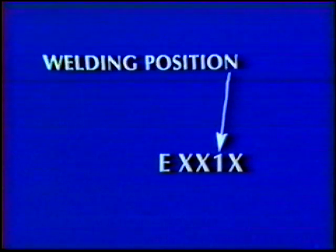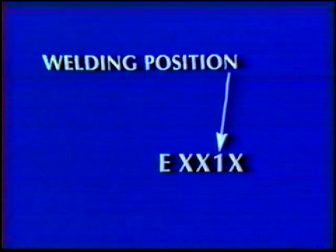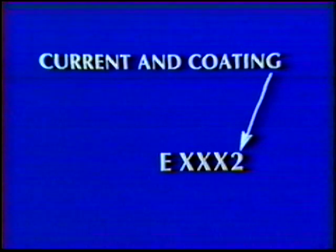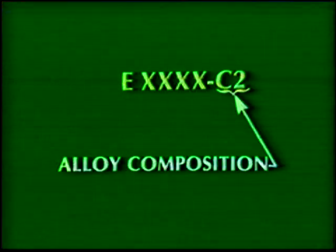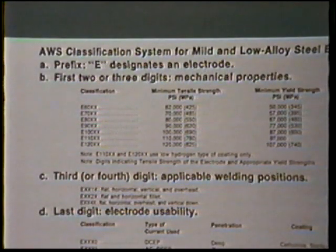The next to last digit in the electrode classification is used to specify the position of welding that can be used for that electrode. The last digit is used to indicate the type of flux coating and the type of current to be used. If the number has a suffix such as C2, it means that the electrode is composed of a specific type of alloy. Refer to your workbook or American Welding Society publications for information and tables that explain the meaning of each digit and suffix in the AWS classification.